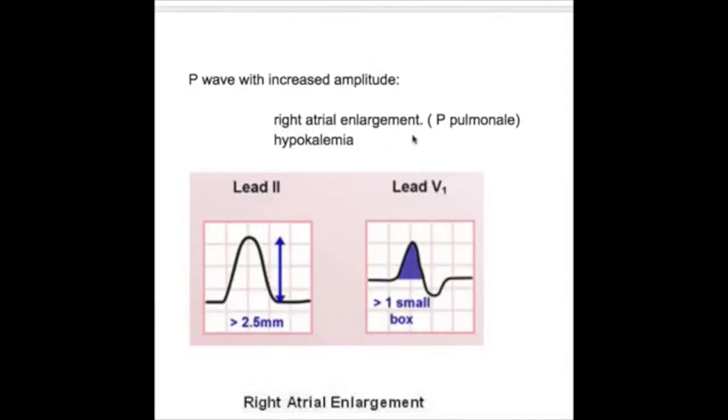It may also have high amplitude in hypokalemia. What happens in P pulmonale? Because of any chronic disease of the lung, COPD. We're discussing here the chest diseases and the cardiac disorders that cause increased amplitude of the P wave.